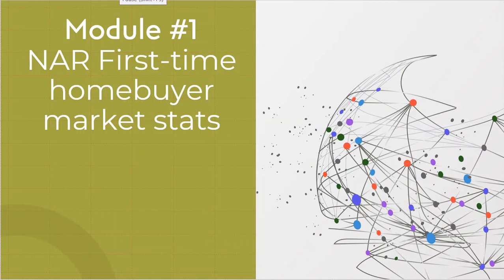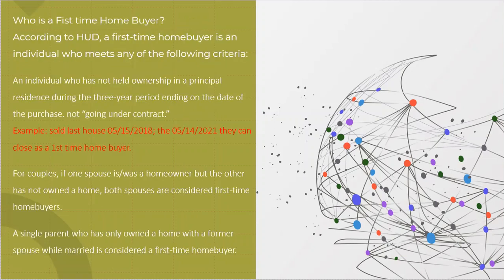All right, let's talk a little bit about Module 1, the NAR's first-time homebuyer statistics. Now, before we can actually get into the statistics, let's talk a little bit about what is considered to be a first-time homebuyer. Because that vision or those words bring up a picture in your mind, but there's actually a lot of different qualifications that can be met for someone to actually become a first-time homebuyer. According to the Department of Housing and Urban Development, known as HUD, a first-time homebuyer is an individual who meets any of the following criteria.